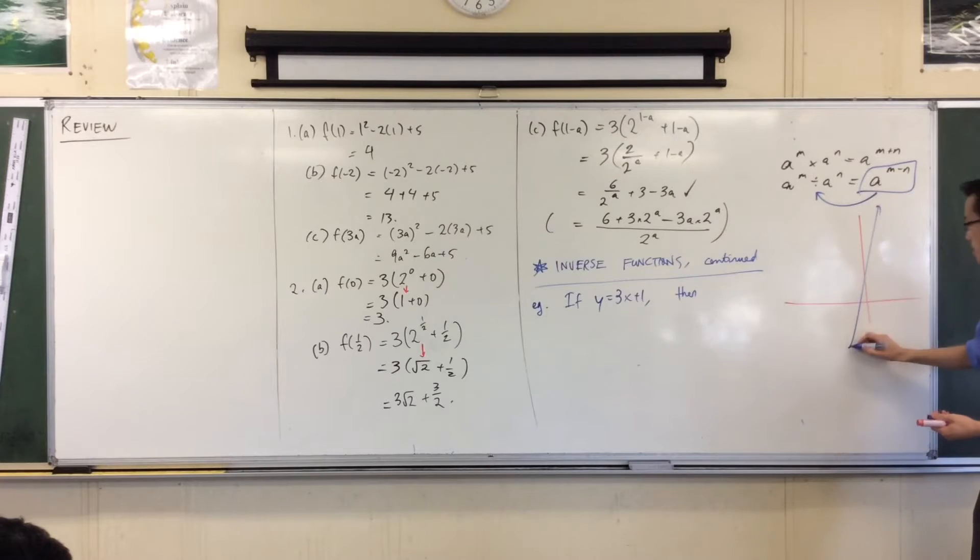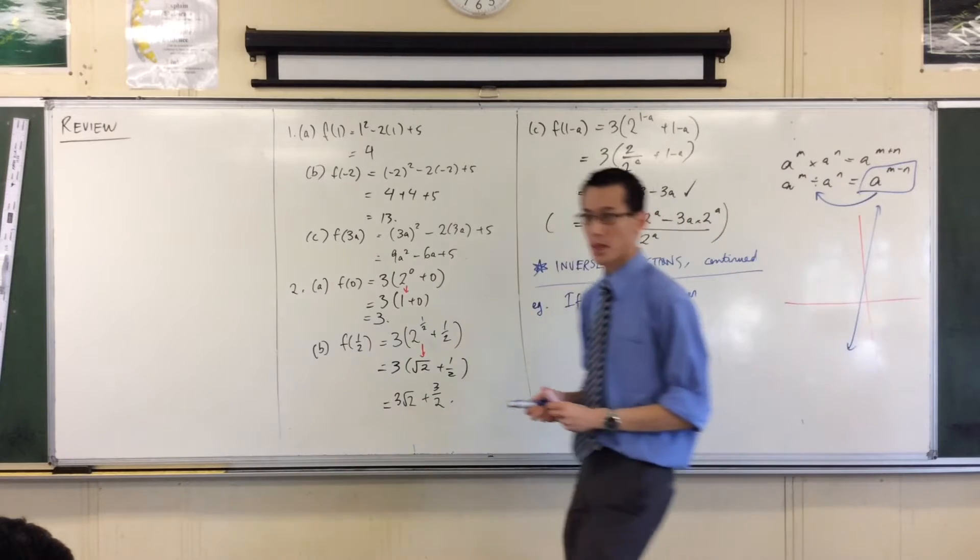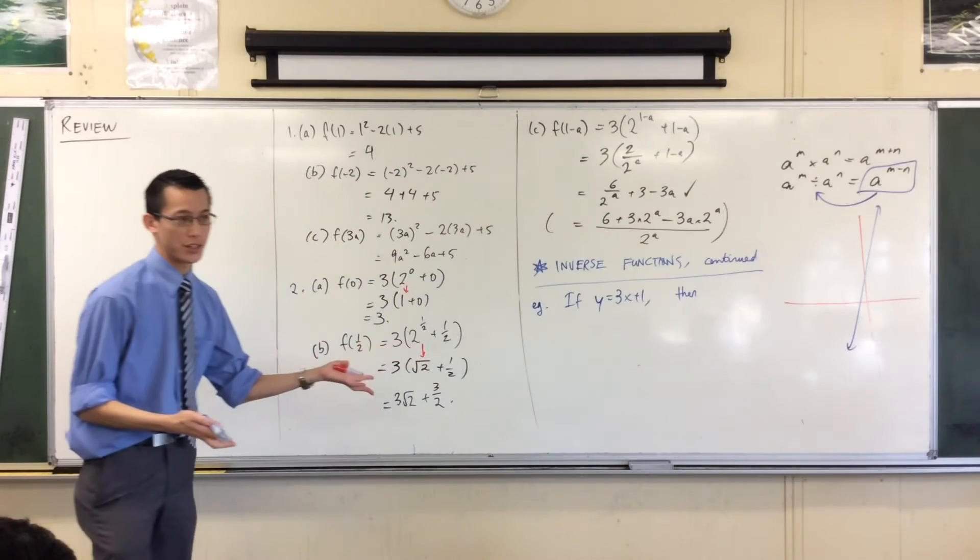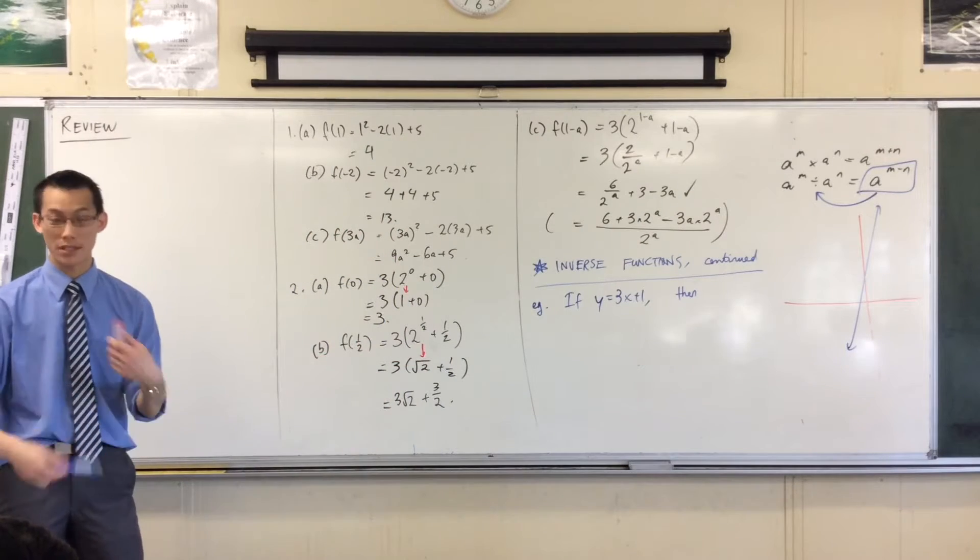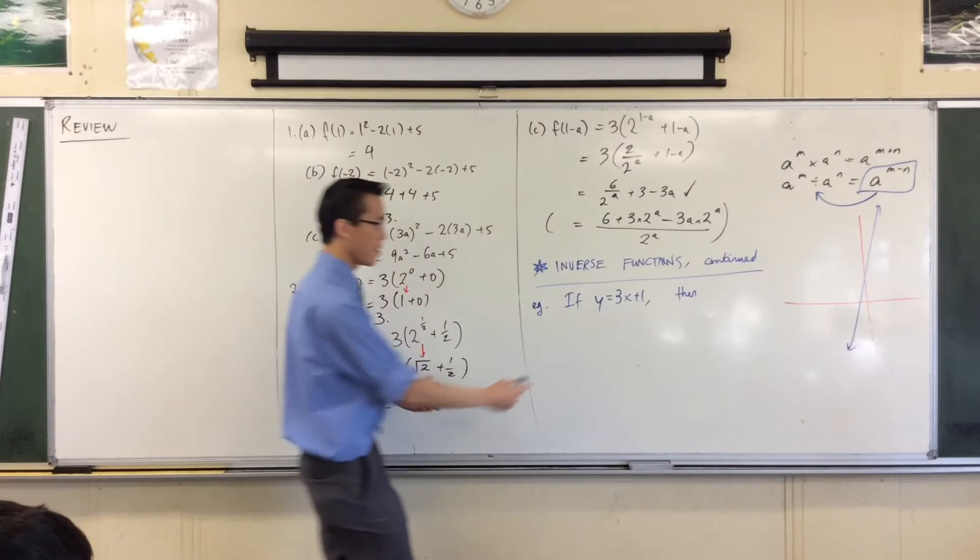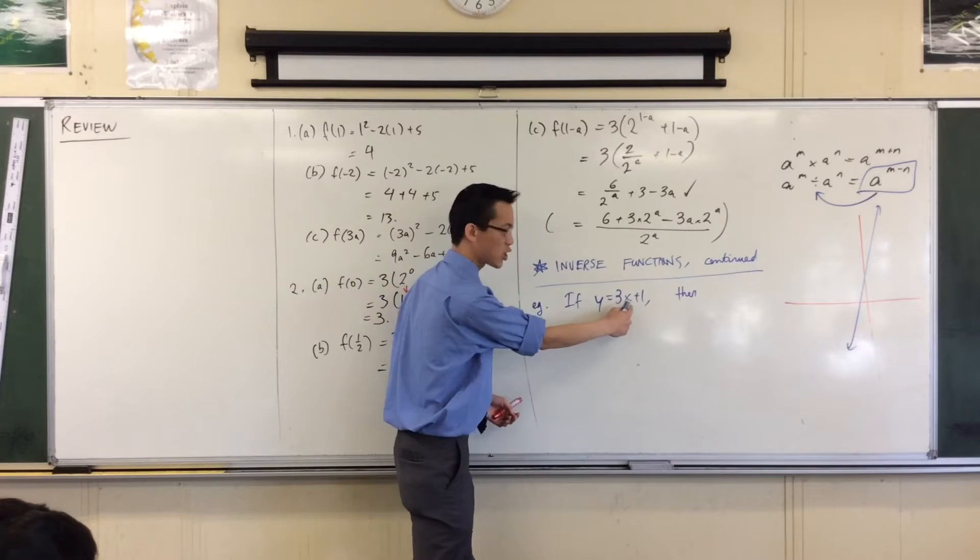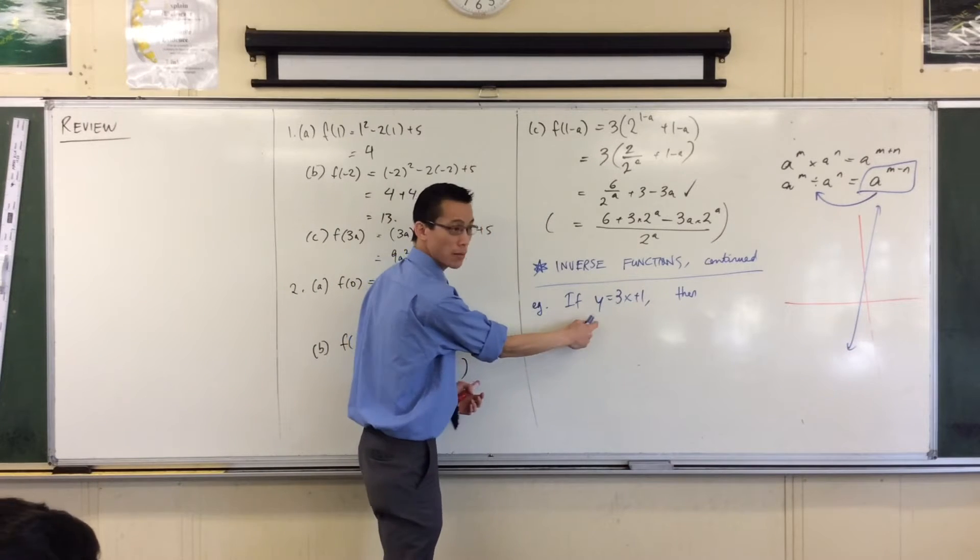I'm guessing something like this. There you go, that's what the line looks like. I can find the inverse function of this, the function that's like the opposite, the flip side of this, by taking my inputs and swapping them with my outputs.